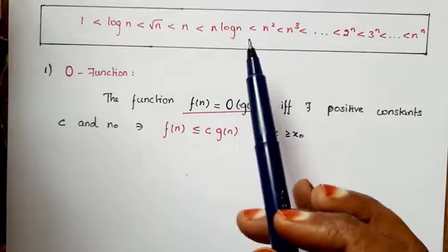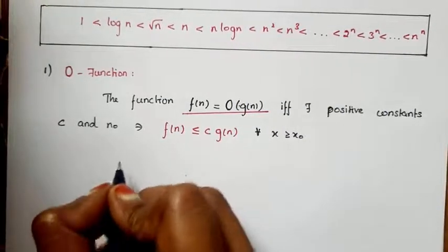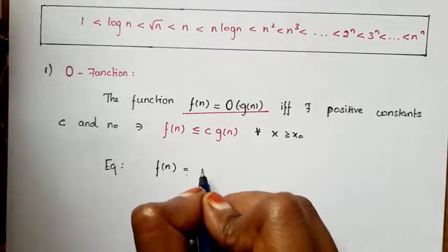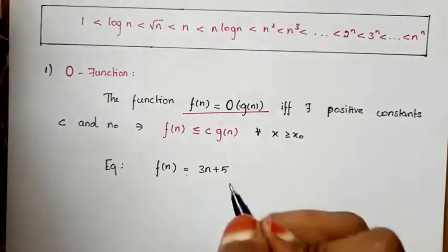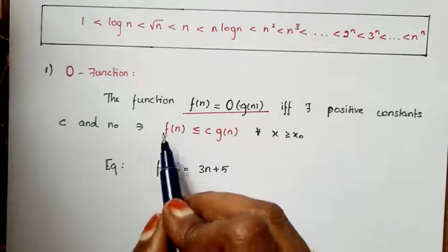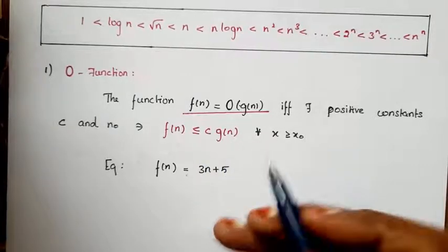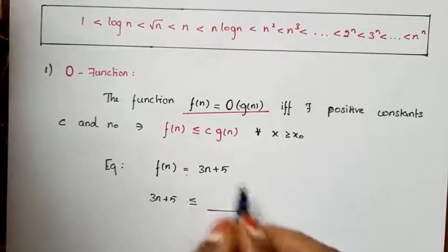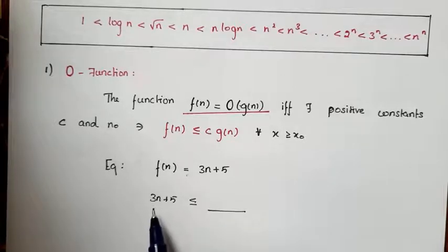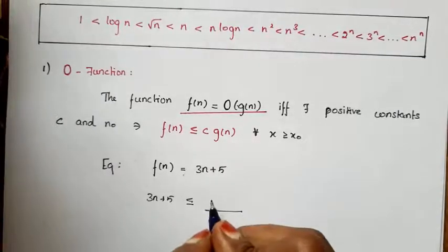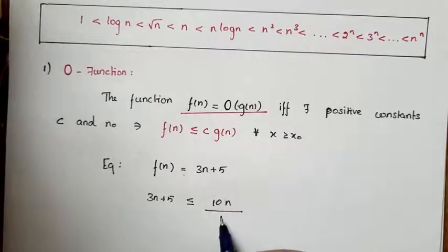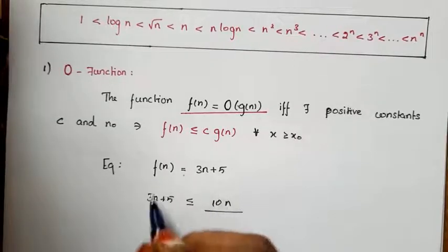Now if you take any function, the function must be in these classes or a multiple of these classes. As an example, if I have f(n) equal to 3n plus 5, our condition is that f(n) must be less than or equal to some constant c times g(n). There are two terms here, but the function must be expressed as a single term.